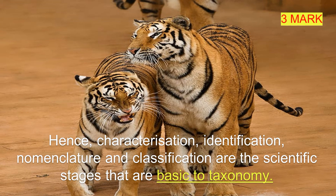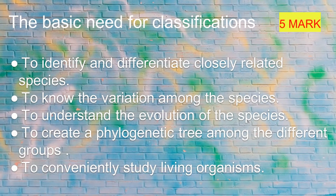What are the basics of taxonomy? This is a three mark question. Characterization, identification, nomenclature, and classification are the scientific stages that are basic to taxonomy. The basic needs for classification — this is a five mark question: one, to identify and differentiate closely related species; two, to know the variation among species; three, to understand the evolution of species; four, to create a phylogenetic tree among different groups; five, to conveniently study living organisms.